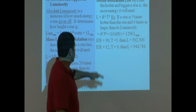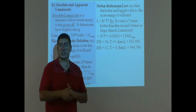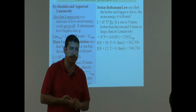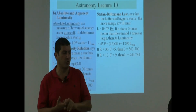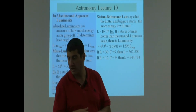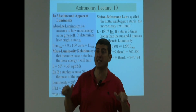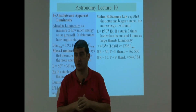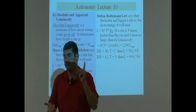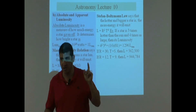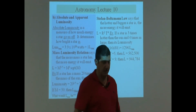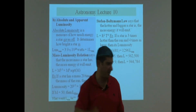From here on, we're going to start talking about apparent luminosity and we're going to go into the Hipparchus scale. So remember, print out the materials I told you to print out: near stars, bright stars, HR diagram, and HR example. See you guys.